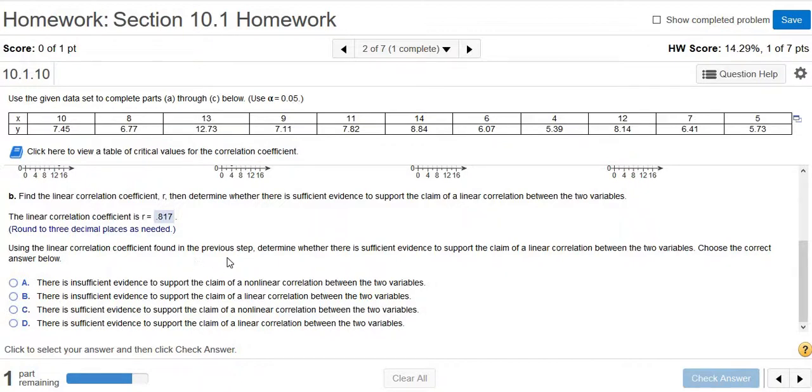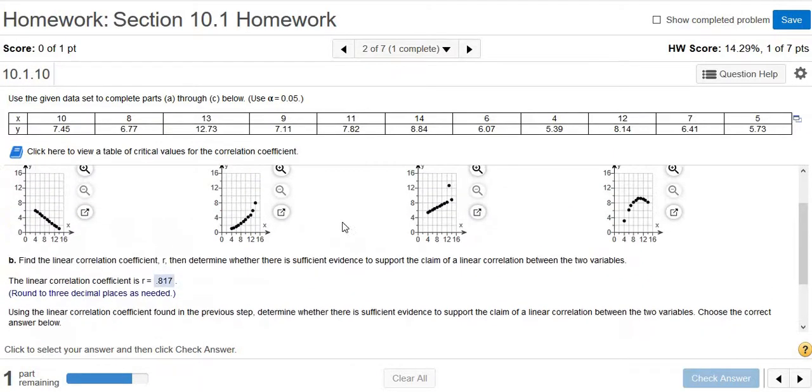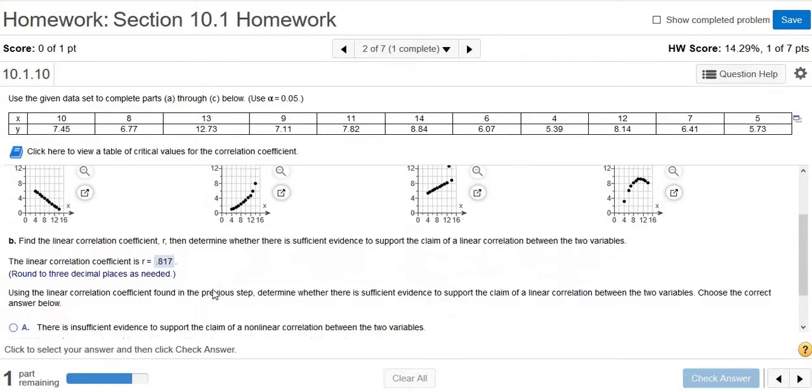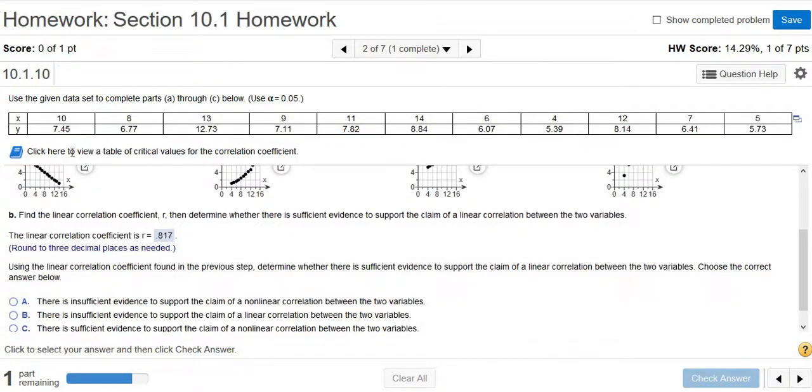Use the Linear Correlation Coefficient found in the previous step. Determine whether there is sufficient evidence to support the claim of a linear correlation between the two variables. Choose the correct answer below. Right, so we have to see if mathematically there is a straight line pattern. We do have a straight line pattern visually, except for the presence of that one outlier. But mathematically, we should check.